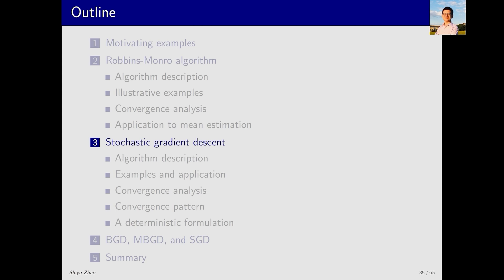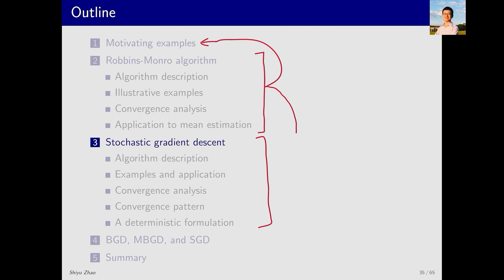So far we have completed the first two parts. In the first part we introduced an algorithm for mean estimation which involves iteratively computing an expectation. In the second part we introduced the RM algorithm, which is simple yet useful. The mean estimation algorithm introduced in the first part is actually a special case of the RM algorithm. Next, in the third part we will discuss stochastic gradient descent, abbreviated as SGD. This algorithm is widely used in reinforcement learning and many machine learning tasks, making it very important. We will see that SGD is also a special case of the RM algorithm.